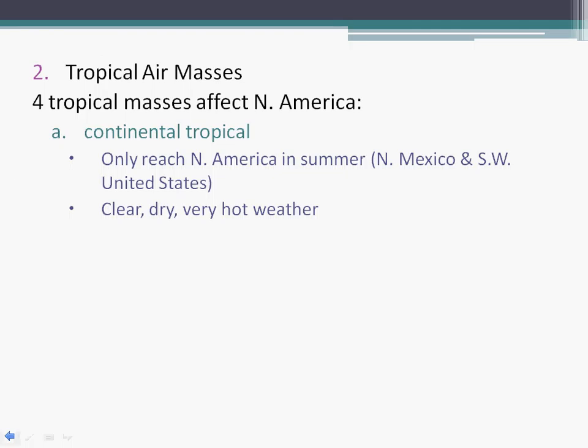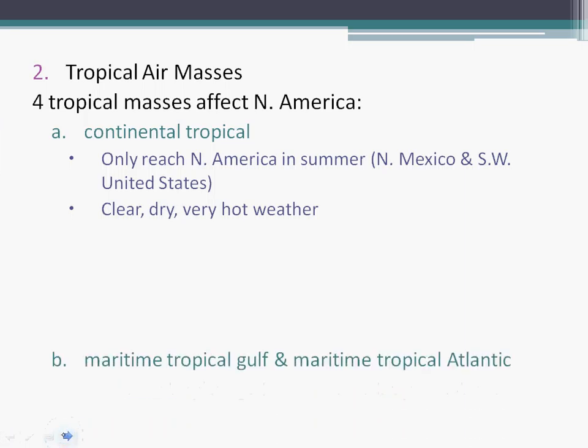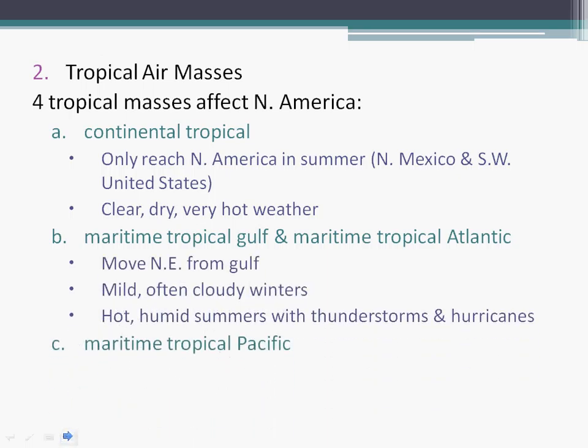Continental tropical — we're thinking New Mexico, hot dry Texas, Arizona, parts of Utah: hot, clear, dry weather. Maritime tropical Atlantic — Florida, Georgia, Alabama, Arkansas, Louisiana, Mississippi. Are you getting a picture of where all these are at?